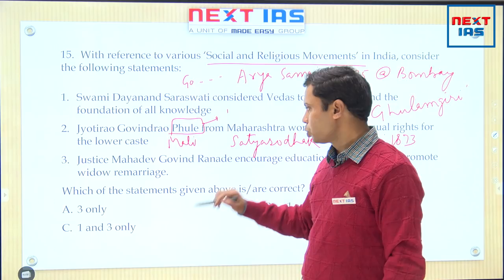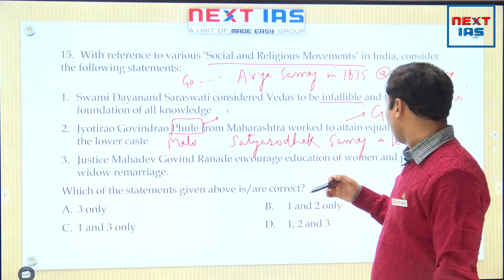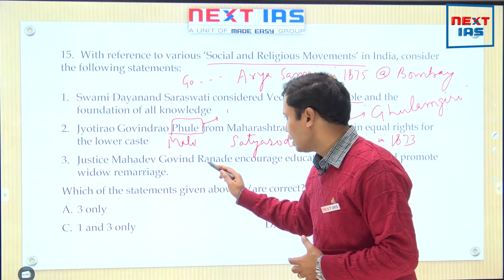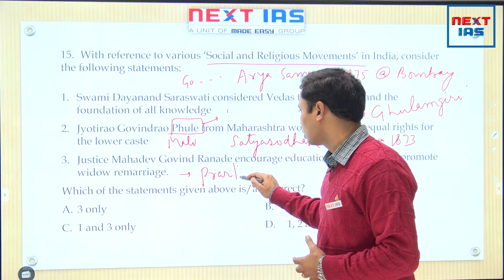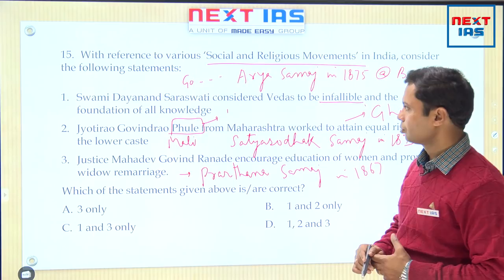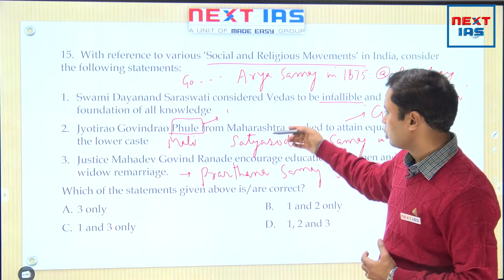Third: Justice Mahadev Govind Ranade encouraged education of women and promoted widow remarriage — that is also true. For bringing social improvement of women and lower-caste people, he also appealed for increasing the marriageable age for boys and girls. Mahadev Govind Ranade established the Prarthna Samaj at Bombay in the year 1867. So which are correct? Statements 1, 2, and 3 — all are correct, answer is D.